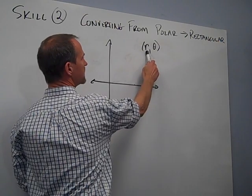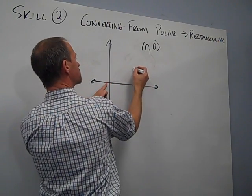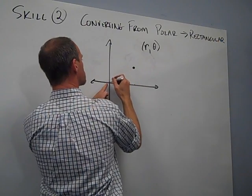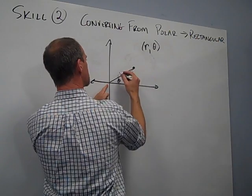If you remember that we find a position in polar coordinates by going out some distance r and then rotating to a given angle. So this will be our angle theta, and this length here is the distance r.